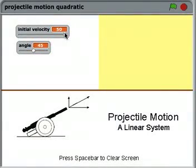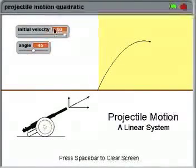So for example, the initial velocity of the projectile is 50, the projection angle is 45 degrees, so I'll click on the green flag and there's the trajectory of the projectile fired for those particular input values.